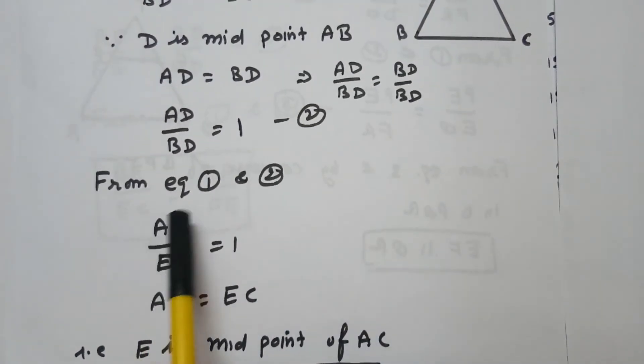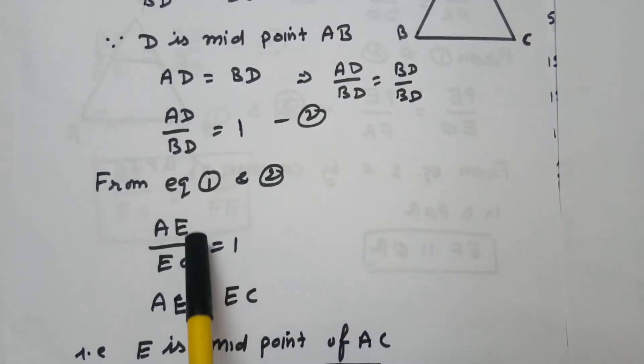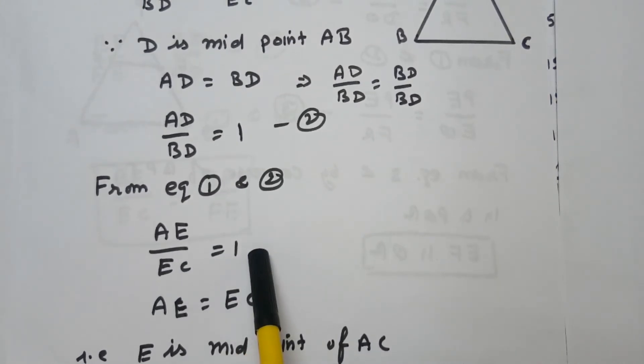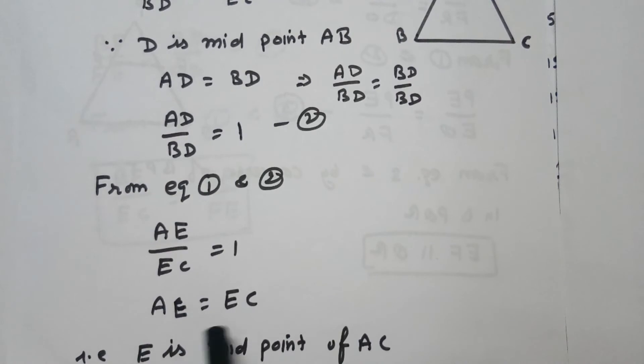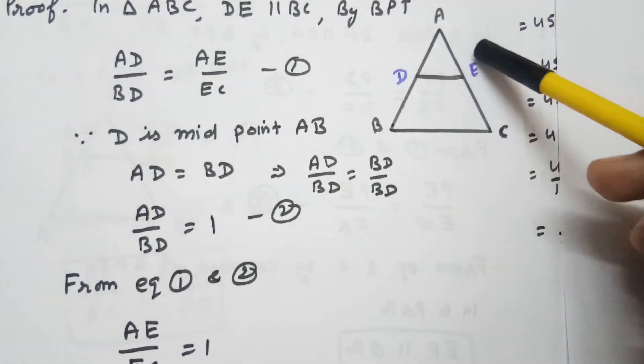From equation 1 and 2, because AD over BD equals to 1, so AE over EC equals to 1. So this EC will multiply to this side and will become AE equal to EC.